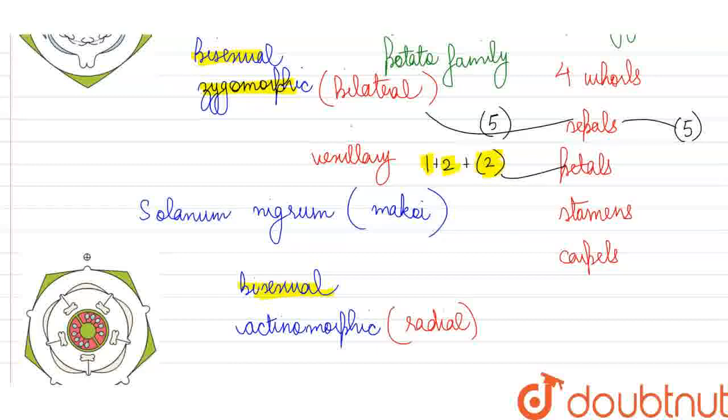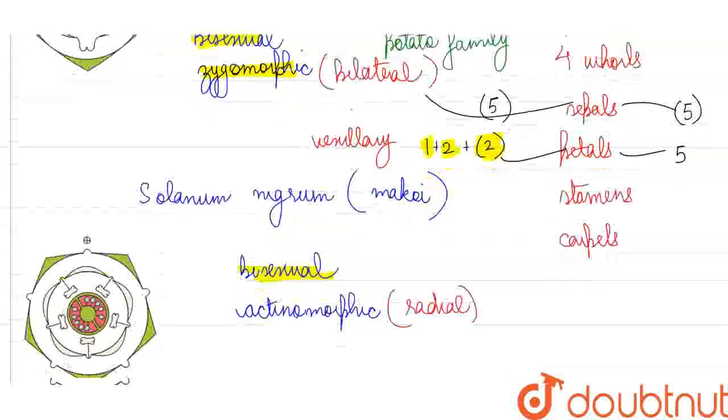However, in our potato family, we will have five petals with valvate aestivation. That is, they are going to touch each other but not overlap.